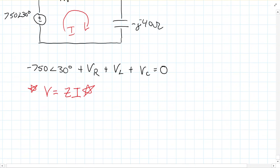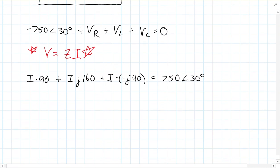So, I'm going to move the 750 to the other side, so my voltage here for the resistor is just going to be my current times 90. Voltage for the inductor is going to be my current times J160, and then the voltage for the capacitor is going to be plus my current times negative J40, and this is going to equal 750 at an angle of 30 degrees. Alright, but then we can easily see here, we can factor out an I, and we get 90, plus J160, minus J40, is equal to 750, at an angle of 30 degrees.